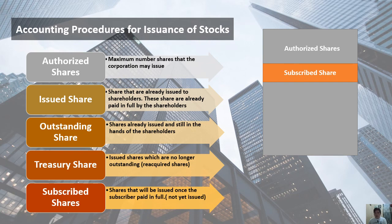To simply classify these shares, you can use a diagram. Think of the authorized share as the outer box — for example, 100,000 authorized shares is the maximum the management can issue. Inside that are subscribed shares, which are not yet issued and can only be issued once the subscriber pays in full. Also inside are issued shares — already issued to shareholders who paid in full. Issued shares are further divided into outstanding shares — in the hands of shareholders — and treasury shares — issued but no longer outstanding because they are back in possession of the corporation. The sum of outstanding shares and treasury shares equals issued shares, and issued shares cannot exceed authorized shares.